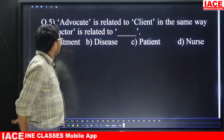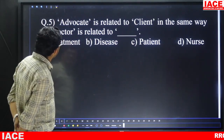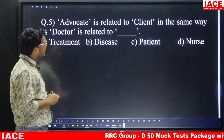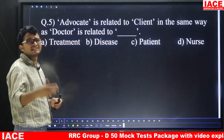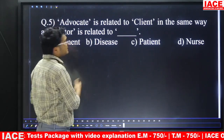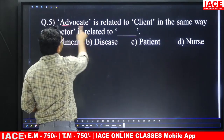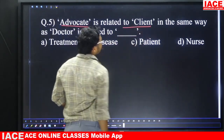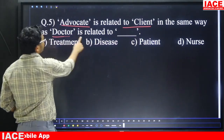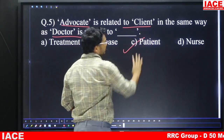Question number five: advocate is related to client. In the same way, doctor is related to what? An advocate deals with clients, and similarly a doctor deals with patients. So the answer is option C — patients.